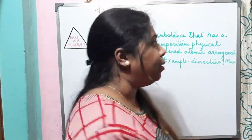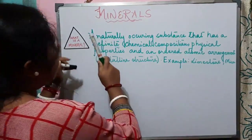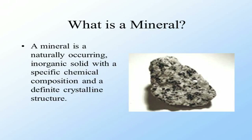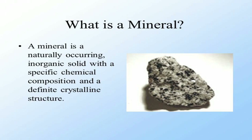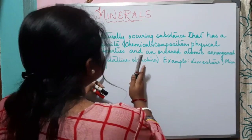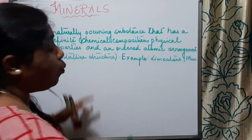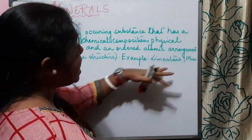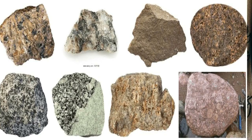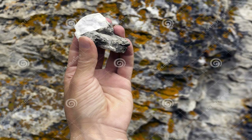So what is a mineral? A naturally occurring substance that has a definite chemical composition, physical properties, and an ordered atomic arrangement and crystalline structure is referred to as a mineral. Examples of minerals include limestone, mica, gold, and diamond.